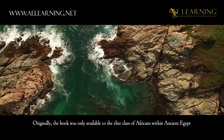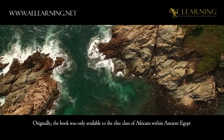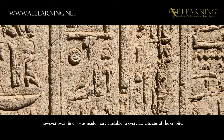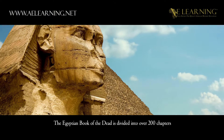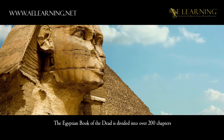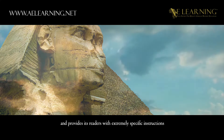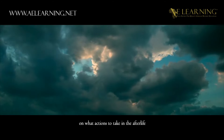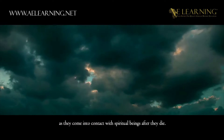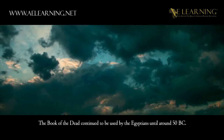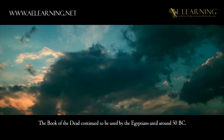Originally, the book was only available to the elite class within ancient Egypt. However, over time, it was made more available to everyday citizens of the empire. The Egyptian Book of the Dead is divided into over 200 chapters and provides its readers with extremely specific instructions on what actions to take in the afterlife as they come into contact with spiritual beings after they die. The Book of the Dead continued to be used by the Egyptians until around 50 BC.